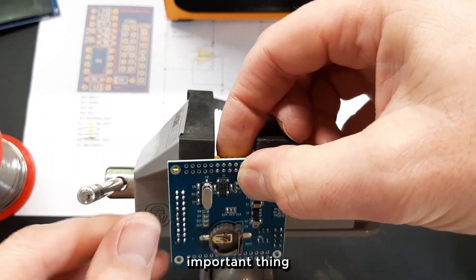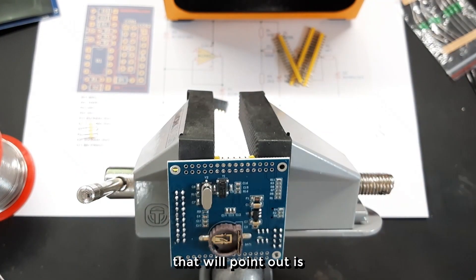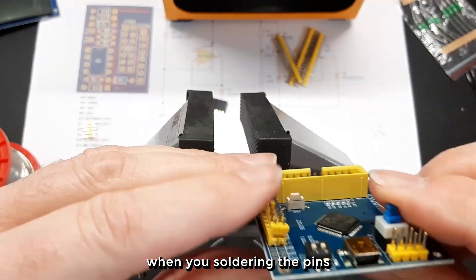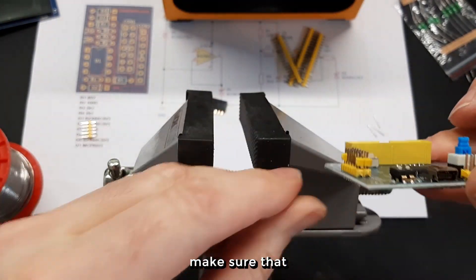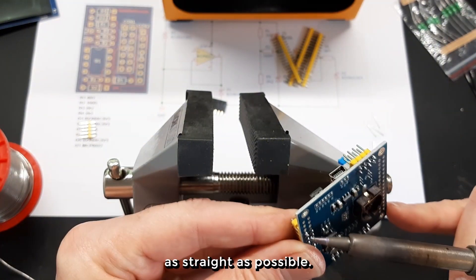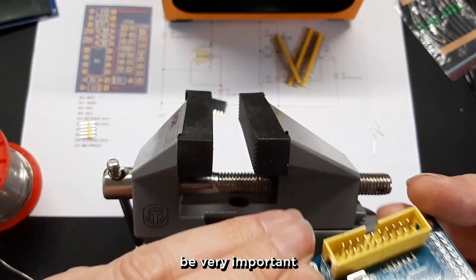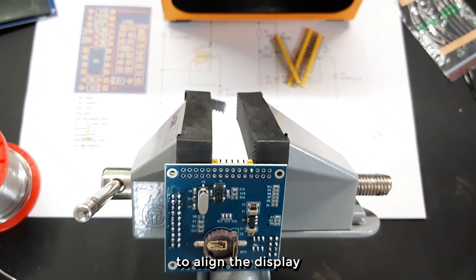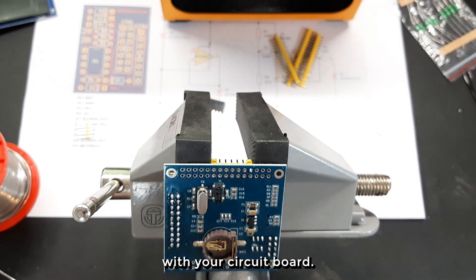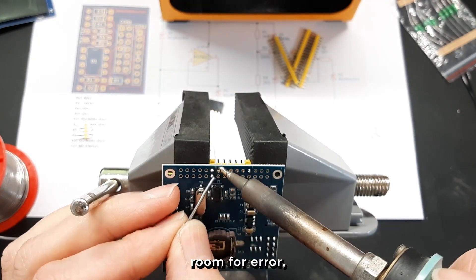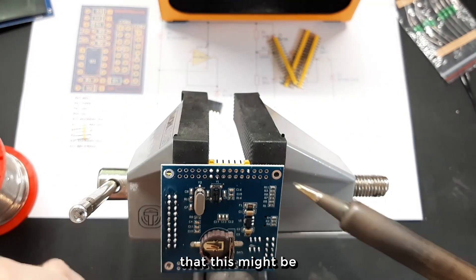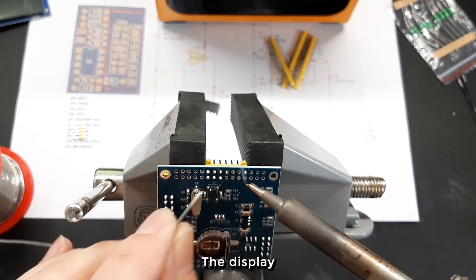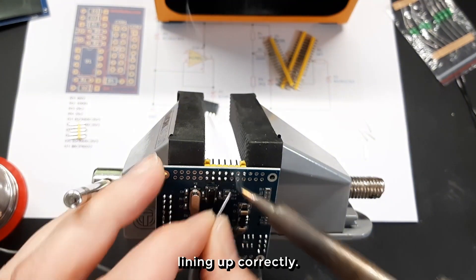One very important thing I will point out is when you're soldering the pins into the microcontroller board, make sure that you solder them on as straight as possible. This is going to be very important when you're trying to align the display with your circuit board. There is slight room for error, but just bear in mind that this might be one of the reasons that the display might not be lining up correctly.